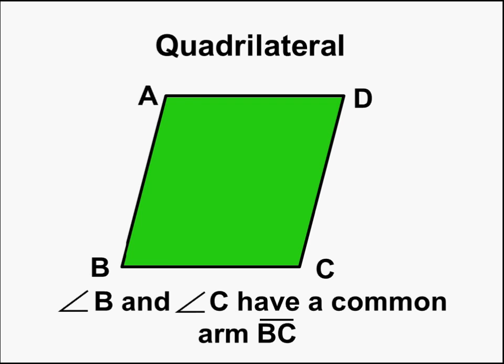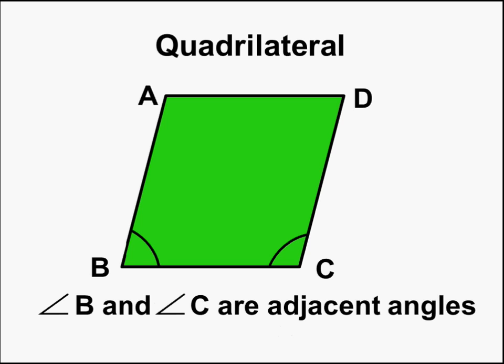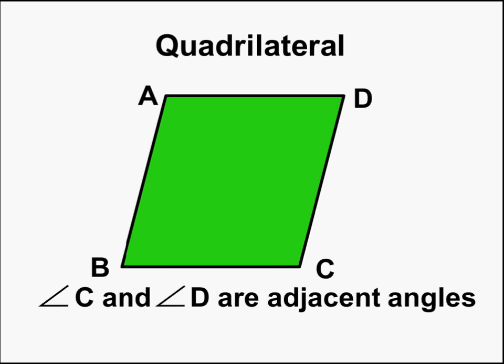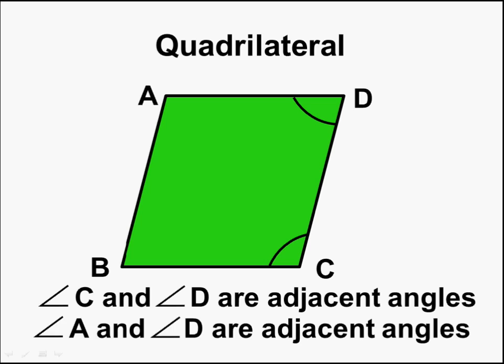Similarly, if we see angle B and angle C, which common arm do they have? Yes, it is line segment BC. Hence, we can say angle B and angle C are also adjacent angles. Similarly, angle C and angle D are adjacent angles with the common arm DC. And also, angle A and angle D are adjacent angles with the common arm AD.